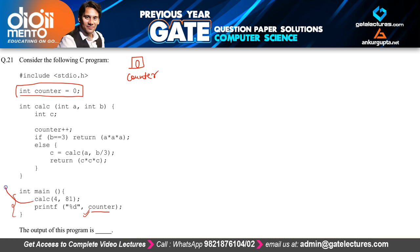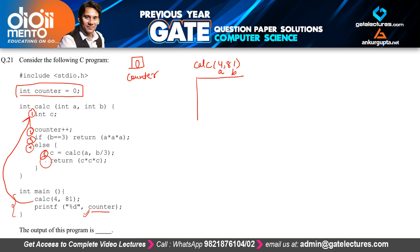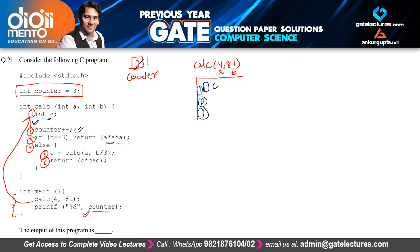We initially call the function with 4 and 81, so A is 4 and B is 81. These are the statements: lines 1 through 6. We'll check all lines one by one. Since we only need the counter value, we may find a shortcut. Line 1 creates int C, line 2 increments counter to 1, and line 3 checks if B equals 3 — since B is 81, line 3 is not executed.